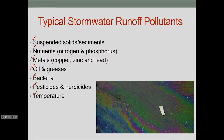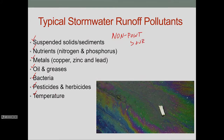Most of these pollutants cannot be traced back to one source or one location. They are often called non-point source pollutants. There are many different small sources of these things, and particularly things like nutrients or suspended solids are ubiquitous — pretty much anywhere that the rain will fall, so the rain can pick up little bits of those things at any location in its travels.